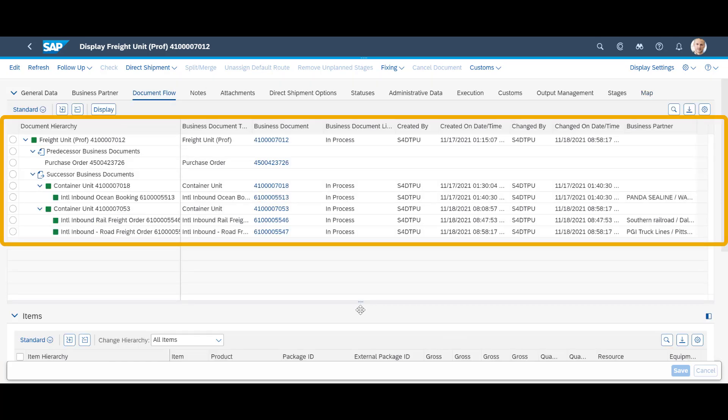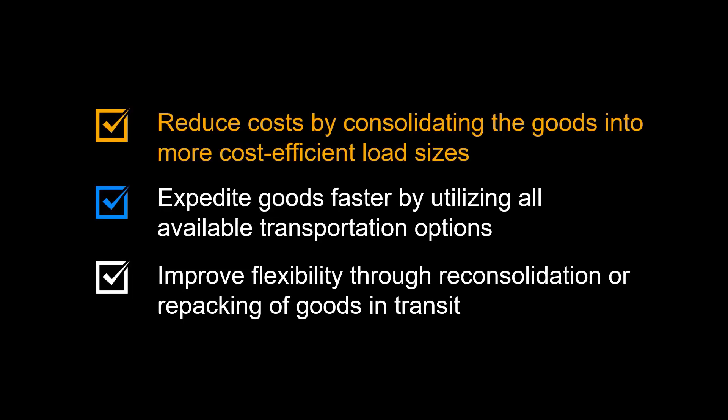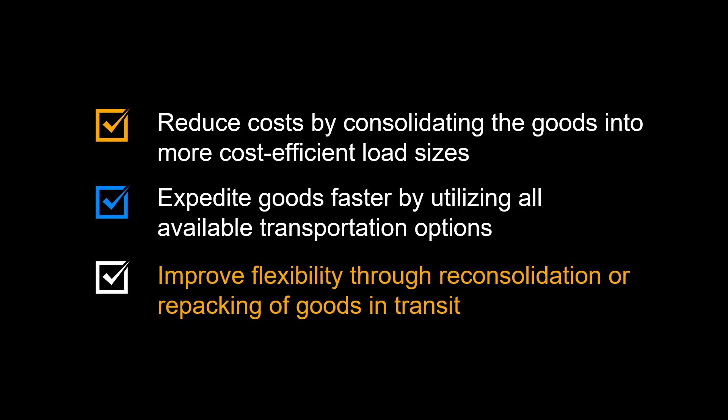The document flow shows how the freight units move between container units and transportation documents. Before we end, we will recap some of the benefits of using transloading. You may reduce costs by consolidating the goods into more cost-efficient load sizes. You can expedite goods faster by utilizing all available transportation options. And lastly, you may improve flexibility through reconsolidation or repacking of goods in transit.